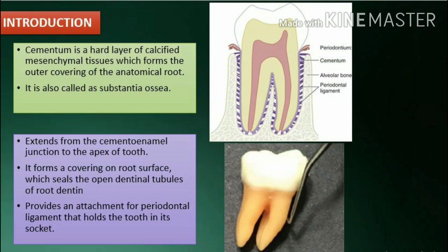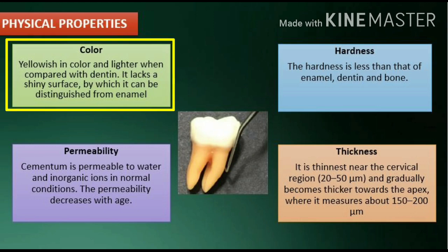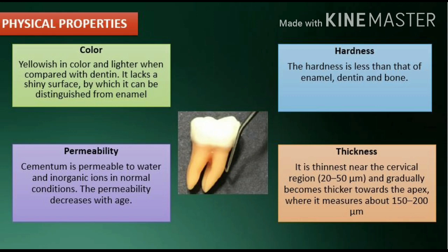It was first microscopically demonstrated by two pupils of Purkinje in 1835. Physical properties of Cementum: color — yellowish in color and lighter when compared with dentin. It lacks a shiny surface, by which it can be distinguished from enamel.